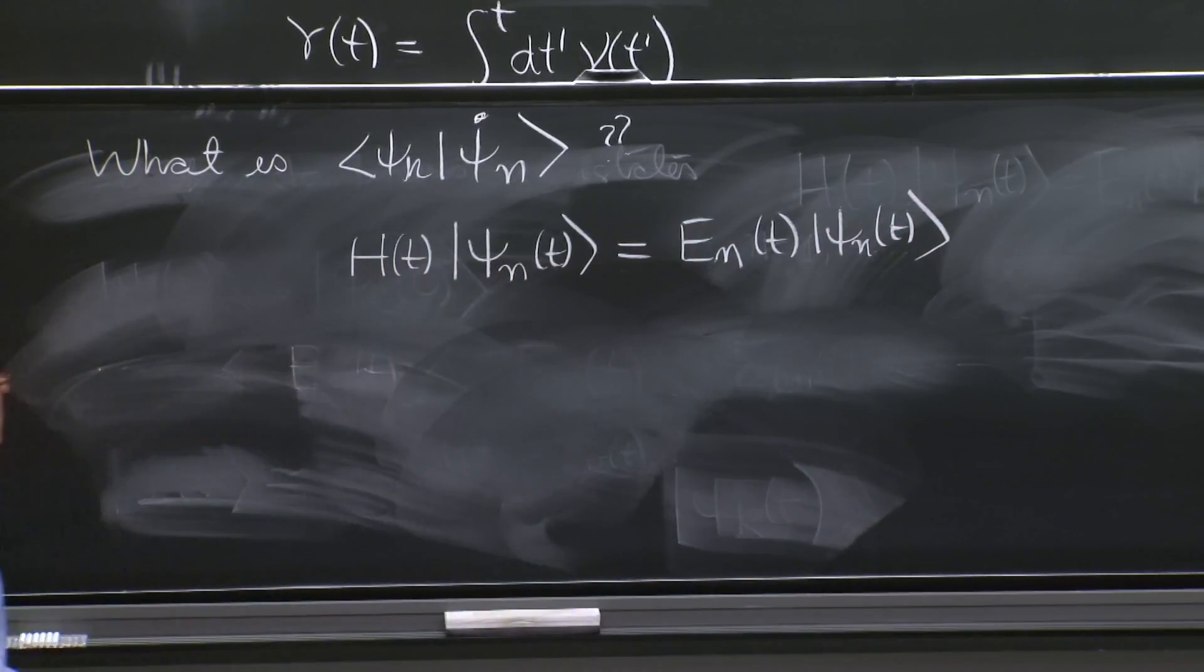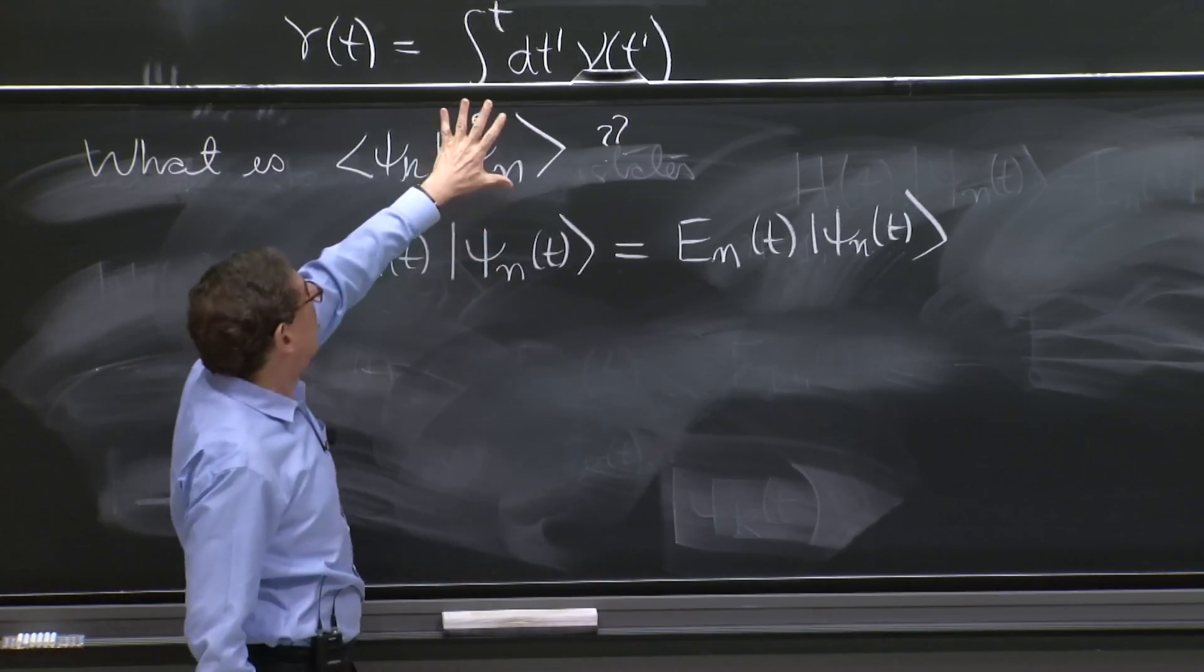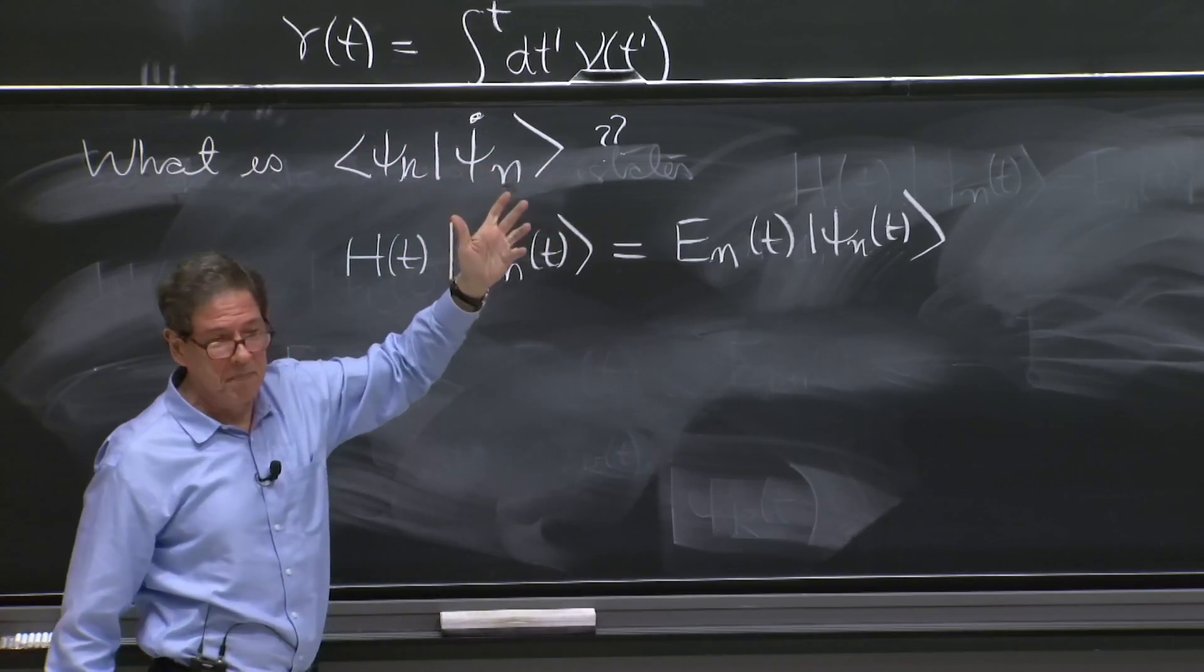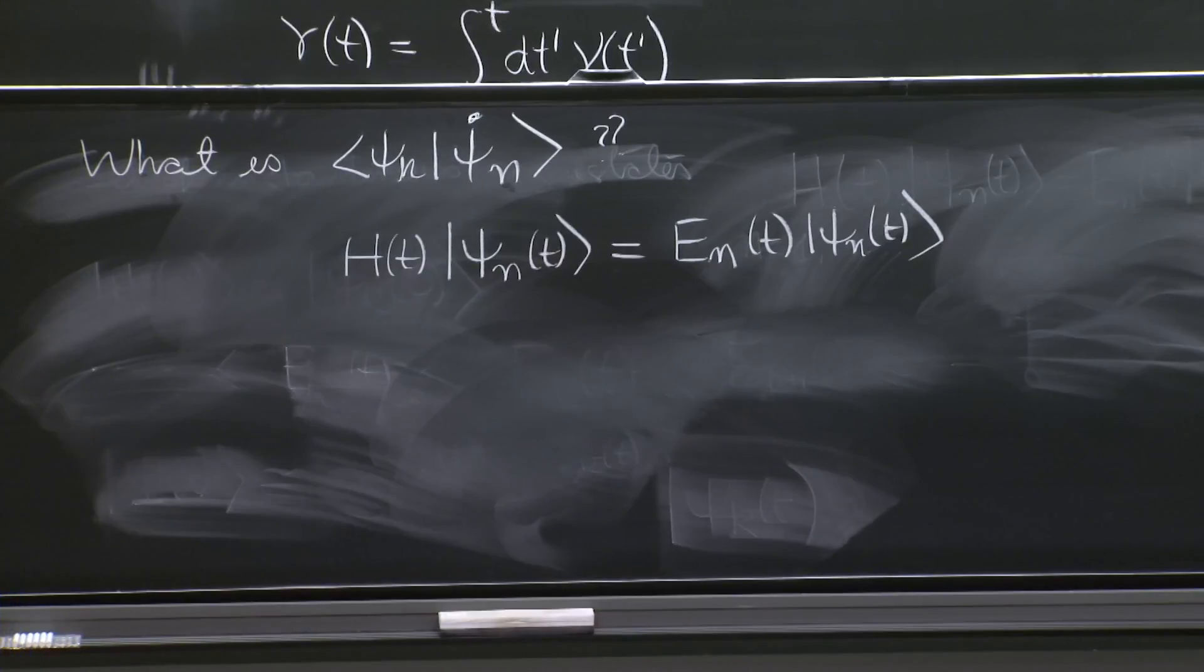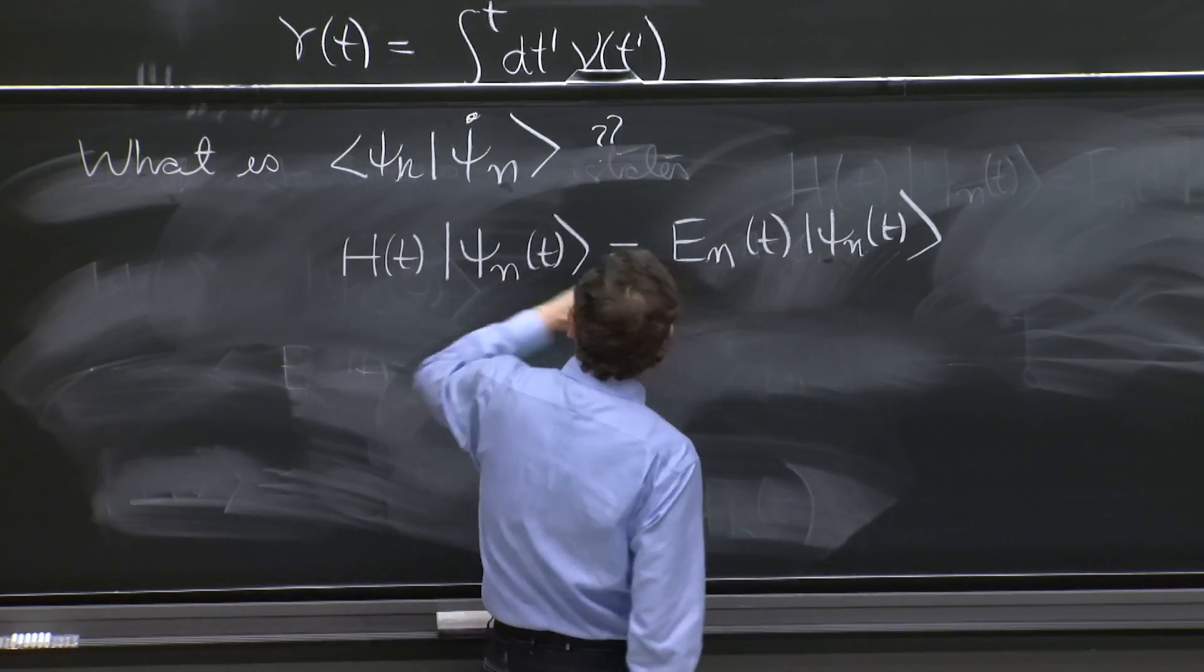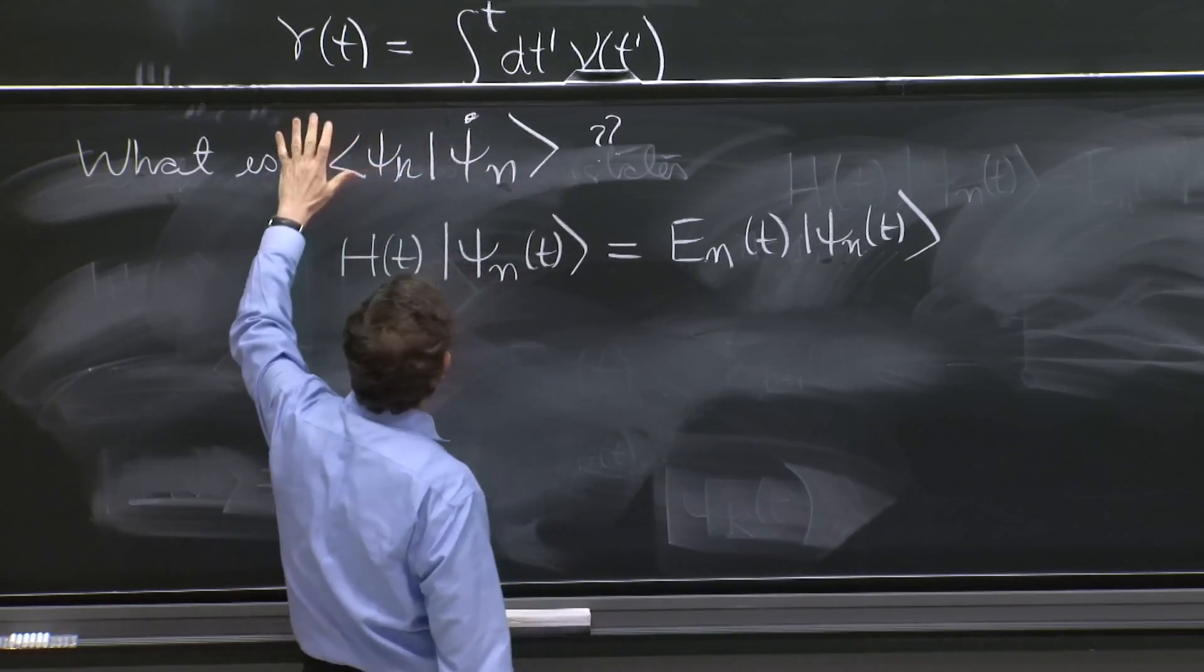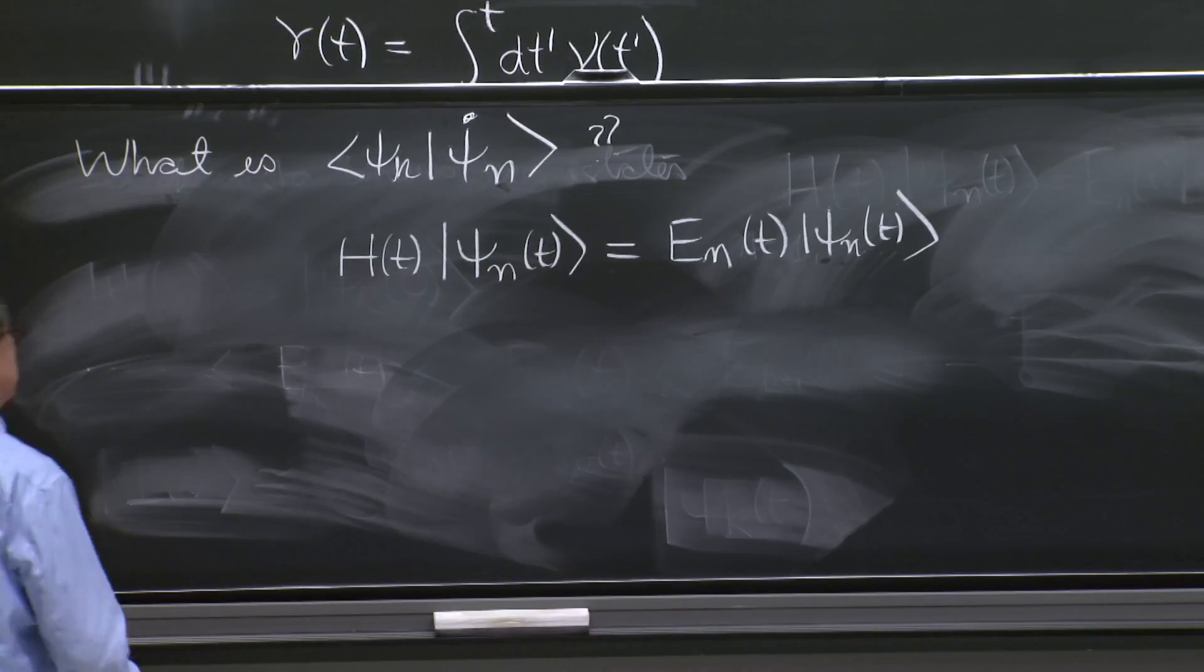So you look at this instantaneous state condition for n and say, okay, I'm going to differentiate, and then I'm going to make the overlap. What else could you do? This is the equation that tells you how the instantaneous energy eigenstate is supposed to change in time. So it must have the information of how to compute this or how to rewrite it in terms of other things that are interesting.